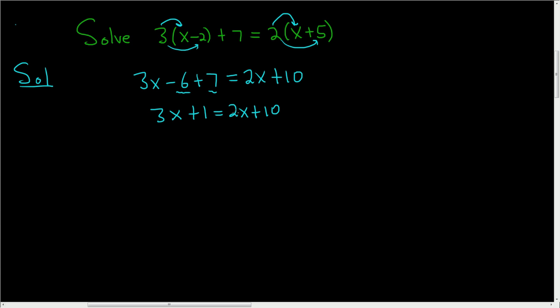Let's go ahead and try to put all our x terms on the left hand side. So we'll subtract 2x from both sides and so we end up with x plus 1 equals 10 and to finish just subtract 1 from both sides so x is equal to 9 and that's it.